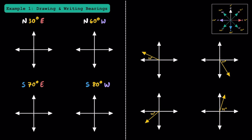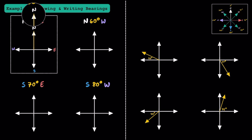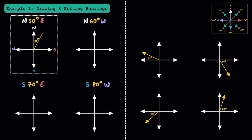For example 1, let's practice drawing and writing bearings. Let's try north 30 degrees east. Remember that north is located here, east is over here, south is down here, and west is over here. Since we're dealing with navigation and not a unit circle, 0 degrees is located on the y-axis pointing towards the north. Since our first direction is north, we start at 0 degrees, and since our second direction is east, we move towards it 30 degrees. This would be the drawing for this bearing — we start at north and move 30 degrees in this direction.